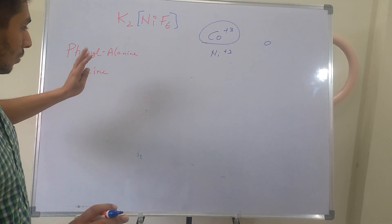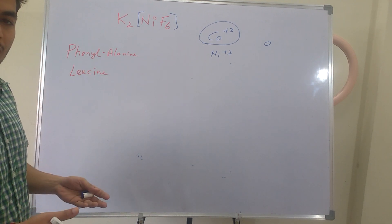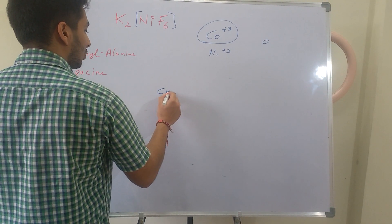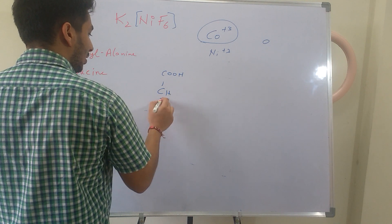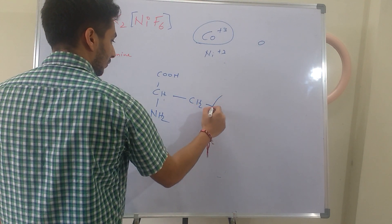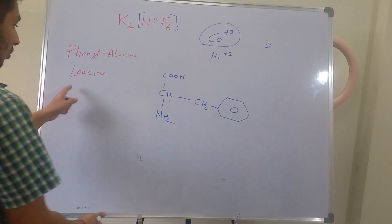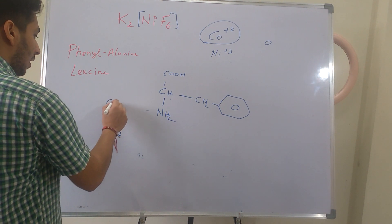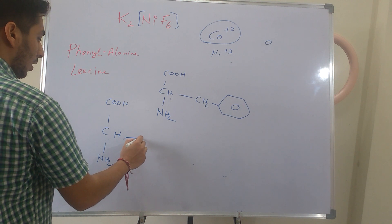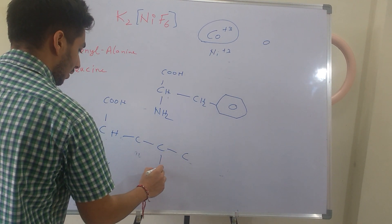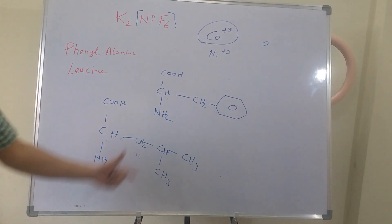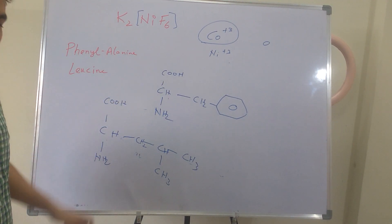The question said that if phenylalanine and leucine are put in a reaction, how many different products can we get? Phenylalanine has the common amino acid backbone — CHCOOH with NH₂ — and the R group is CH₂ and phenyl (Ph). Leucine similarly has the core amino acid structure with COOH and NH₂, and then its own R group. These are the structures of phenylalanine and leucine.